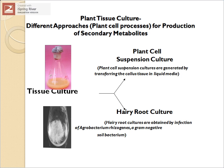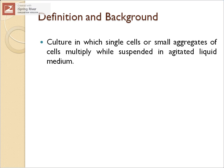Plant cell suspension cultures are created by transferring callus tissue into liquid media. Callus is an undifferentiated mass of cells obtained when an explant is grown on solid medium. Plant cell suspension culture is a culture in which single plant cells or small aggregates of plant cells multiply when suspended in an agitated liquid medium — agitated meaning kept in continuous movement. Under such conditions, single cells or small aggregates multiply to give many cells.